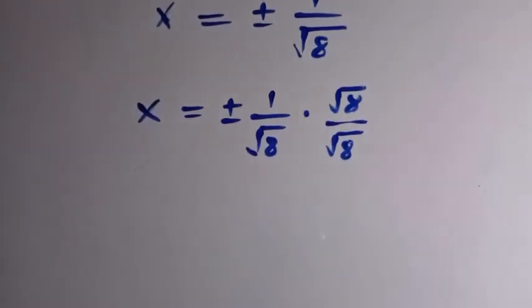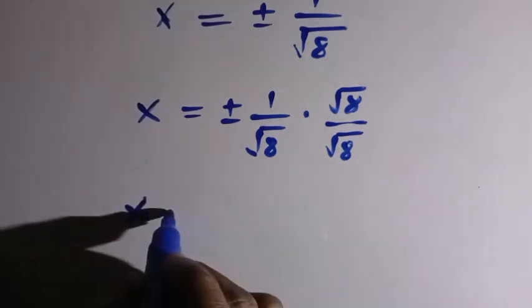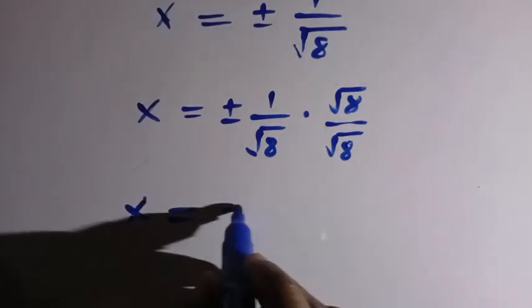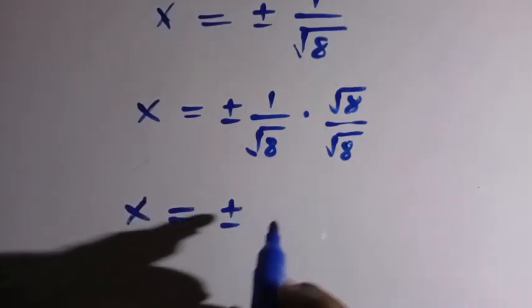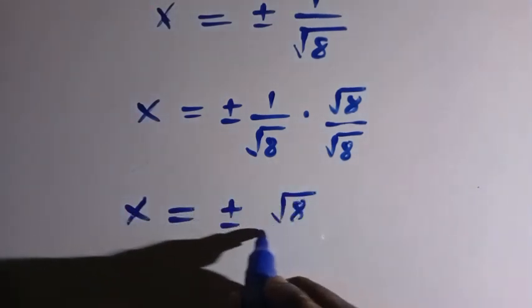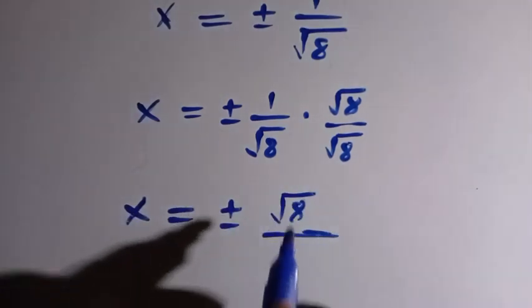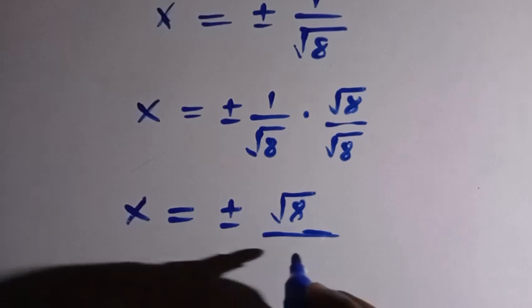Then, having this, we proceed by having x equals plus or minus. So 1 multiplied by square root of 8, that gives us square root of 8 divided by... When we multiply square root of 8 by square root of 8, that gives us 8.